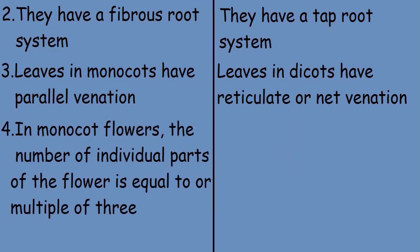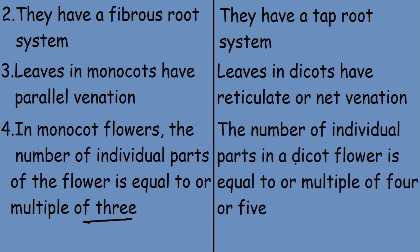In monocot flowers, the number of individual parts of the flower is equal to or a multiple of 3. But for dicots, the number of individual parts is equal to or a multiple of 4 or 5.